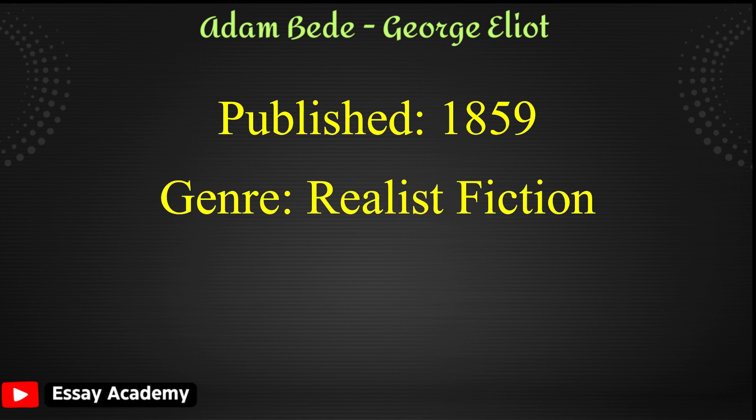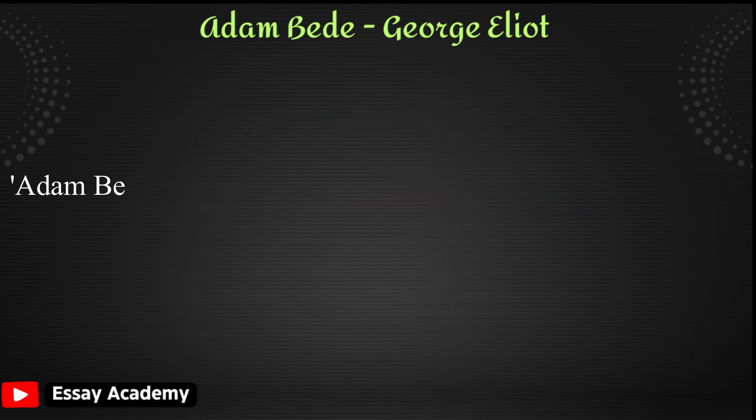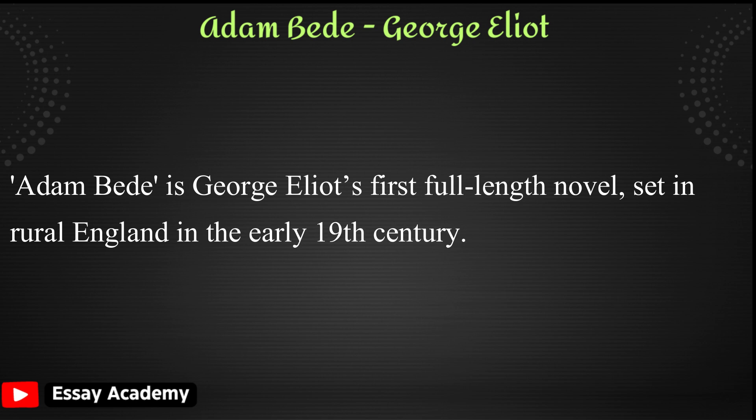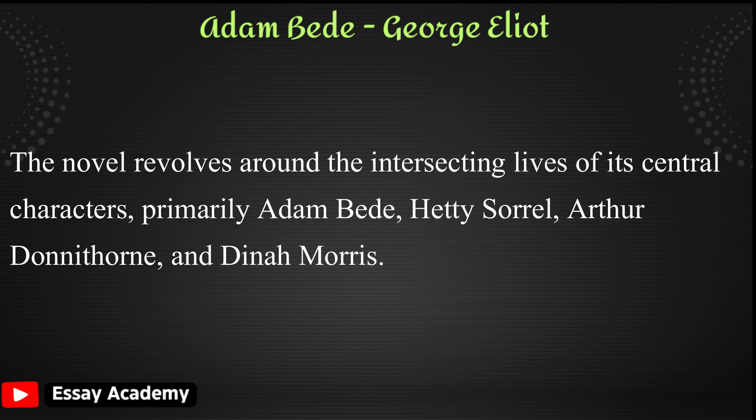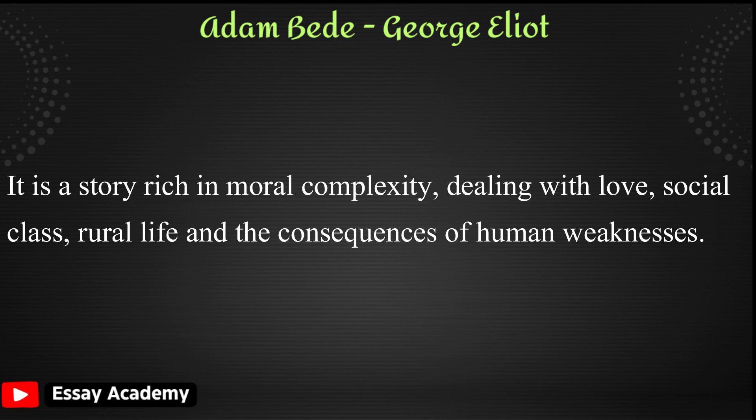Realist Fiction. Adam Bede is George Eliot's first full-length novel, set in rural England in the early 19th century. The novel revolves around the intersecting lives of its central characters, primarily Adam Bede, Hetty Sorrell, Arthur Donnythorne, and Dinah Morris. It is a story rich in moral complexity, dealing with love, social class, rural life, and the consequences of human weaknesses.